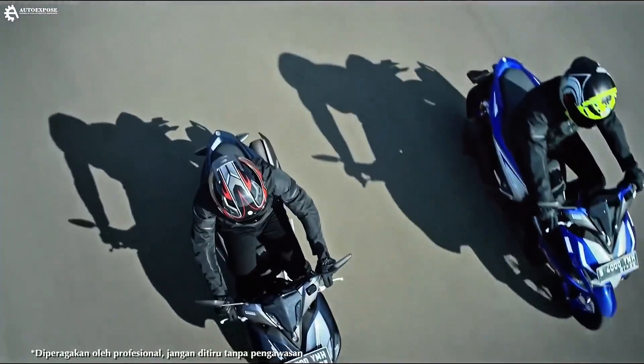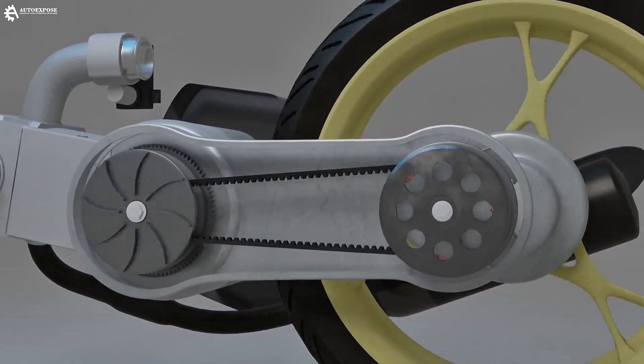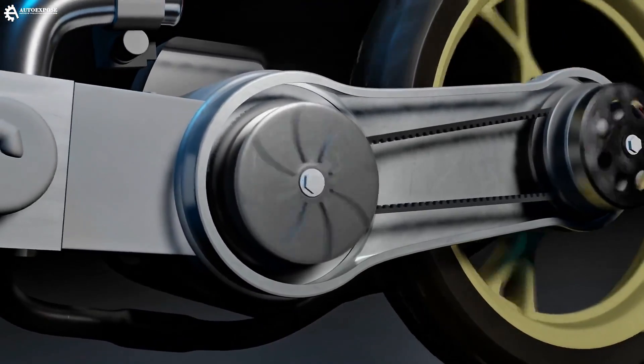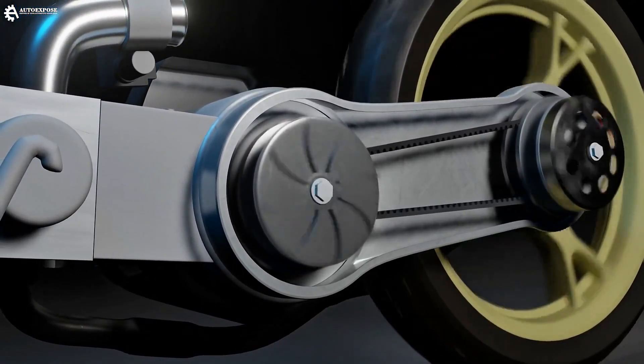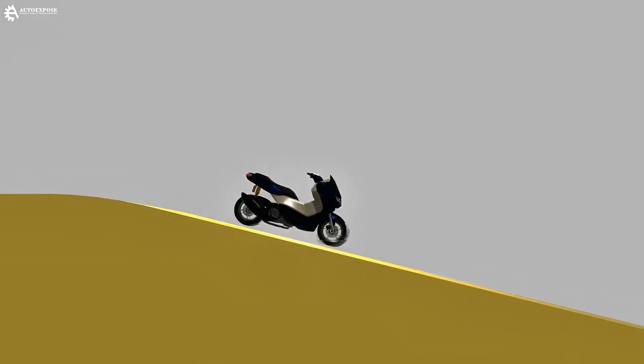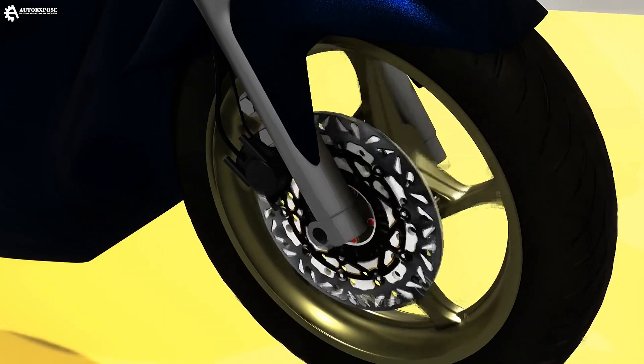Automatic motorcycles are known for not having engine braking, but I dare say that's not entirely true. Even though automatic motorcycles use automatic transmissions, that doesn't mean they don't have engine braking. Automatic motorcycles do have engine braking.